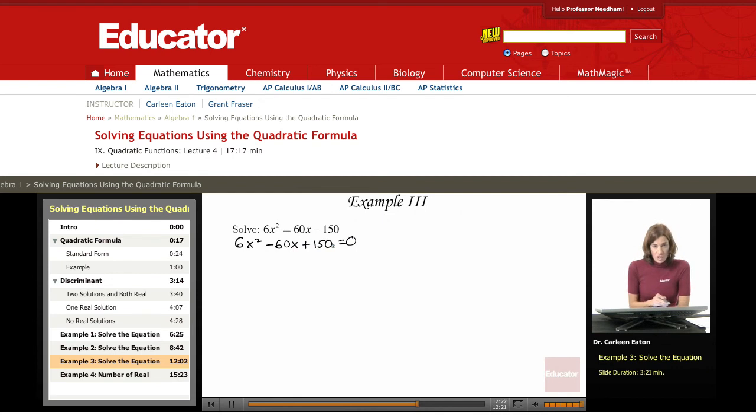Whenever I see large numbers like this, I always look for a greatest common factor. And this does have a greatest common factor. The greatest common factor equals 6. Divide both sides by the GCF, which is 6. Doing that gives me x squared minus 10x plus 25, which equals 0.